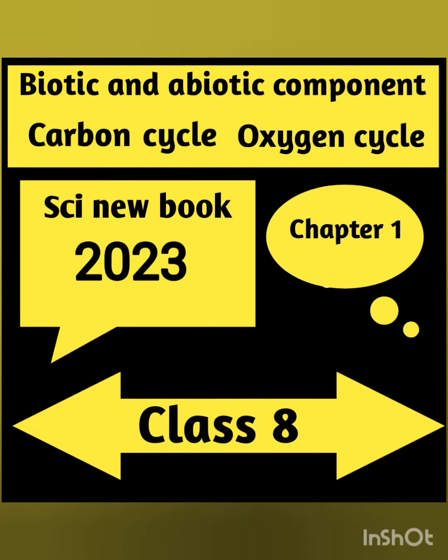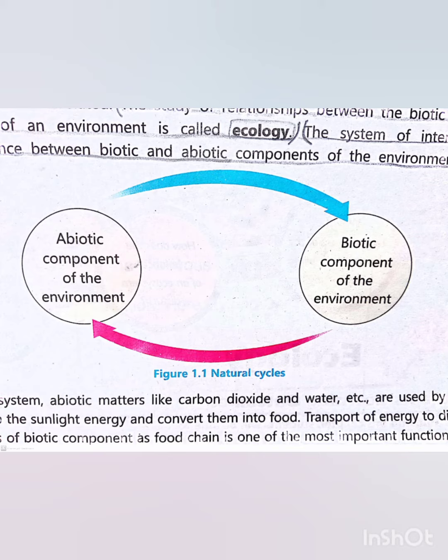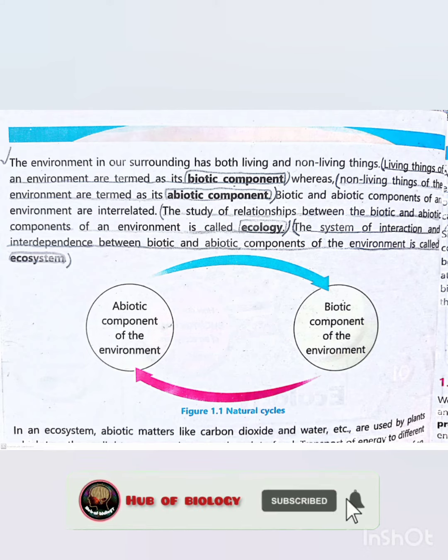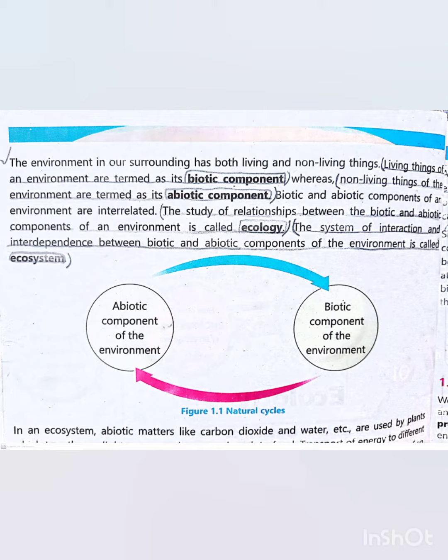Class 8 New PTV Science Book 2023 Chapter 1 Topic is Abiotic Component and Biotic Component. Abiotic Component means non-living things like air, temperature, wind and soil.